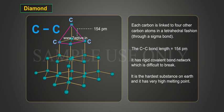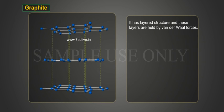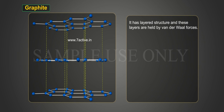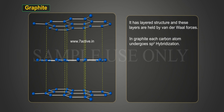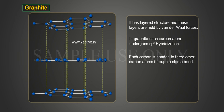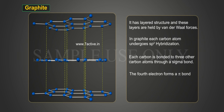Diamond has a rigid covalent bond network which is difficult to break. It is the hardest substance on earth and has a very high melting point. It acts as an electrical insulator. Graphite has a layered structure and these layers are held by van der Waals forces. In graphite, each carbon atom undergoes sp2 hybridization.